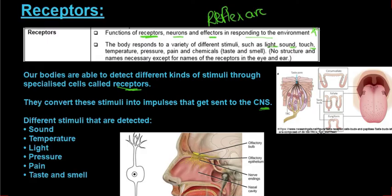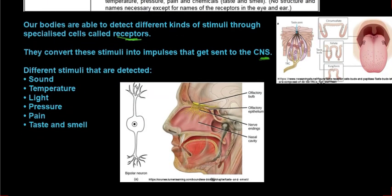The different stimuli that our body is able to detect include sound, temperature, light, pressure, pain, taste, and smell. We'll be looking at sound and light in more detail when we look at the eye and the ear. For example, taste receptors are found on your tongue in something called a taste bud — that is your taste receptor, and from there those taste receptors send a message to your central nervous system.